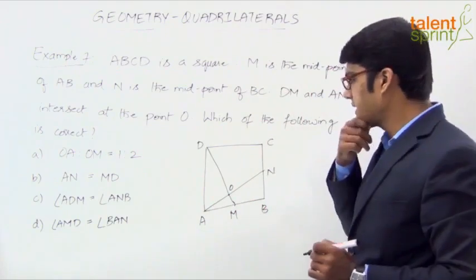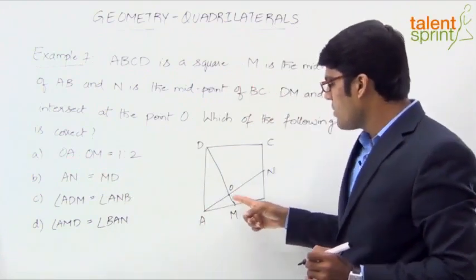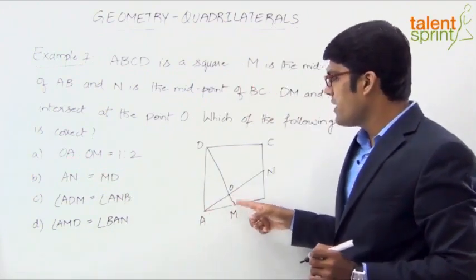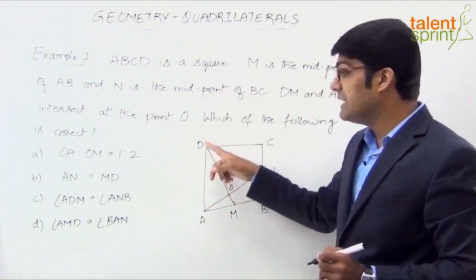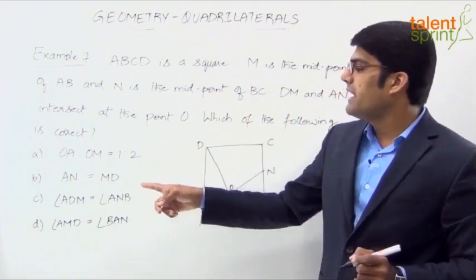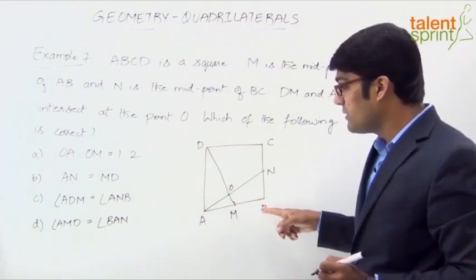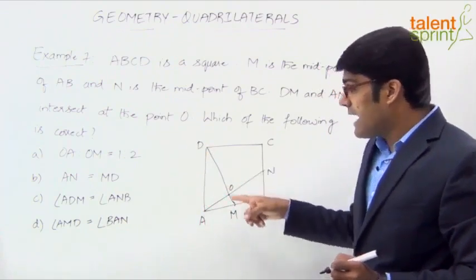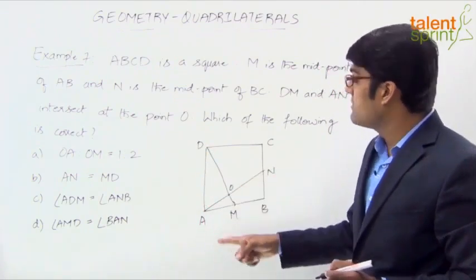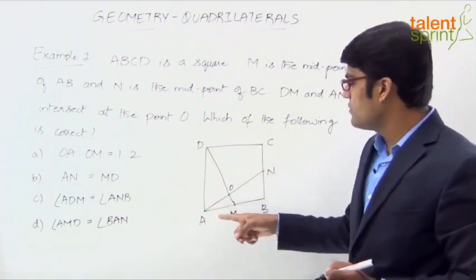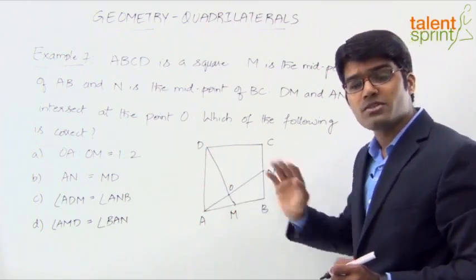Now from this we need to find out which of the following is correct. Looking at the first option: OA to OM is 1 to 2. Option B: AN equals MD. Then angle ADM equals angle ANB. And angle AMD equals angle BAM. We have to find out which of these options is correct.